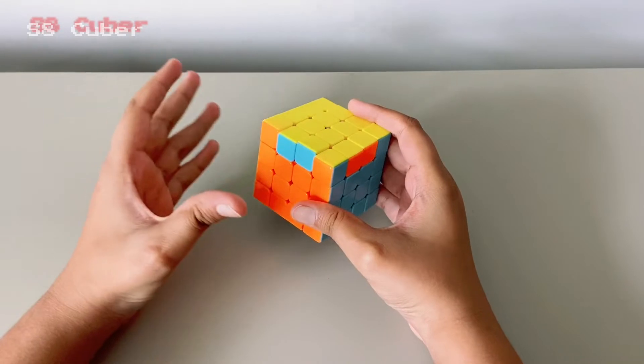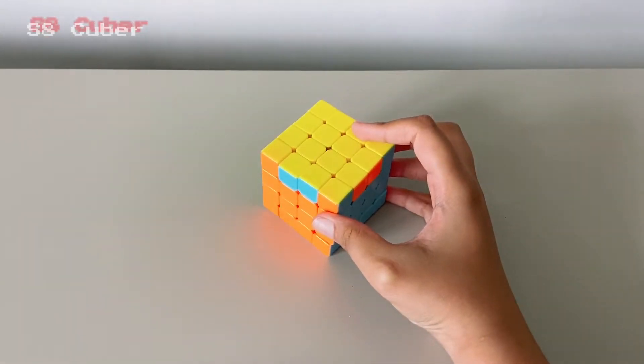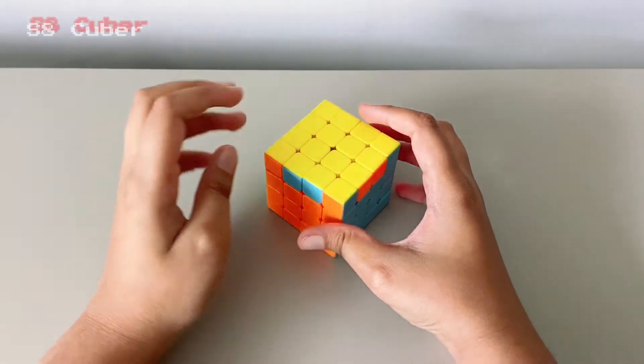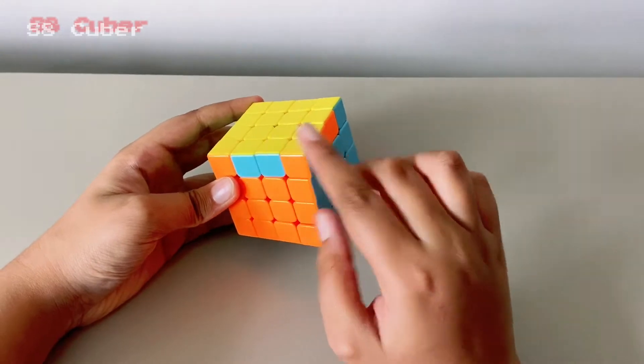So as you guys just saw, I was solving my normal 4x4, and on the last layer I got this case where only two edges are supposed to be switched with themselves, and these two are already solved.